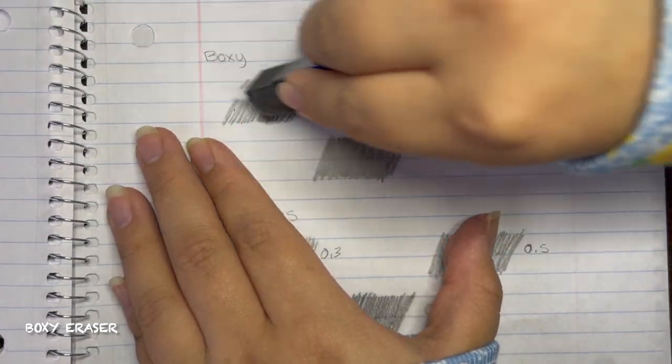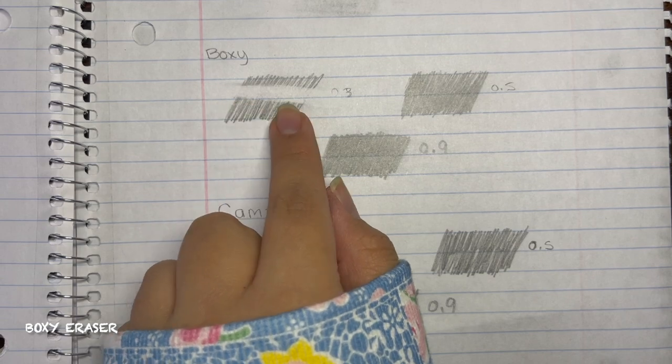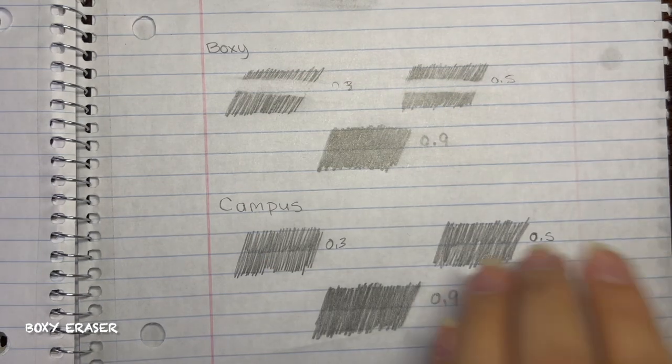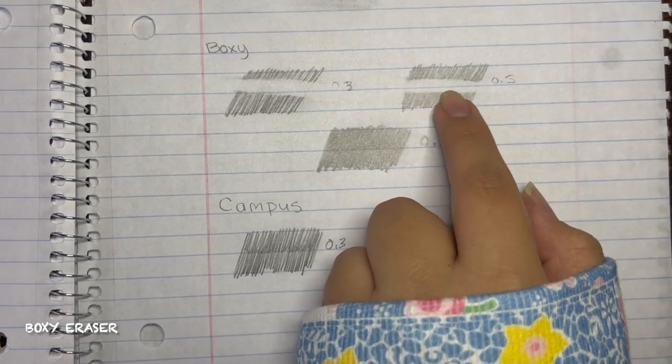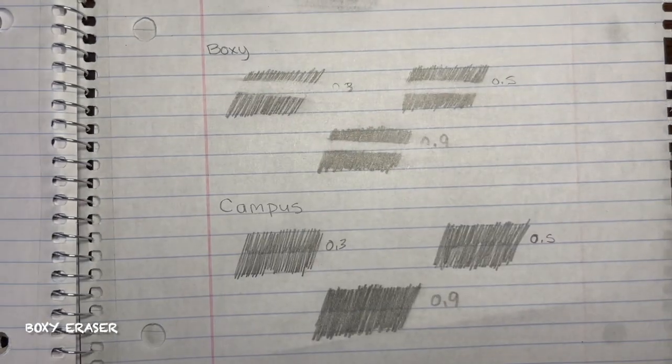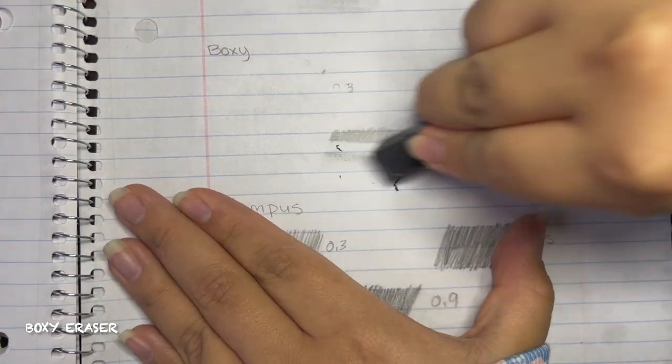On the 0.3 it did so good. I mean look at how clean those lines are. No streaking. And the same on the 0.5, it did so great. And on the 0.9 I think I audibly gasped because of how good it was and there were no streaks. And when you erase it all it just left nothing. This one is my favorite one so far.